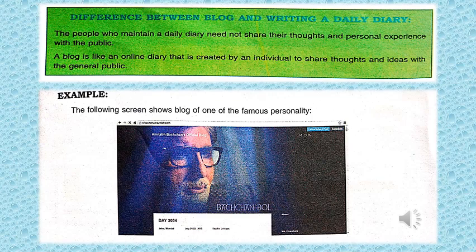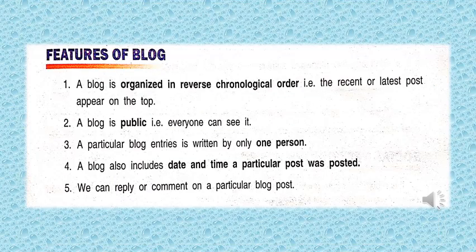For example, the following screen shows the blog of one of the famous personalities. Now let's look at the features of a blog. A blog is organized in reverse chronological order — the most recent post appears on the top. A blog is public, meaning everyone can see it. Each blog entry is written by only one person, and includes the date and time the post was published. We can also reply or comment on a particular blog post.